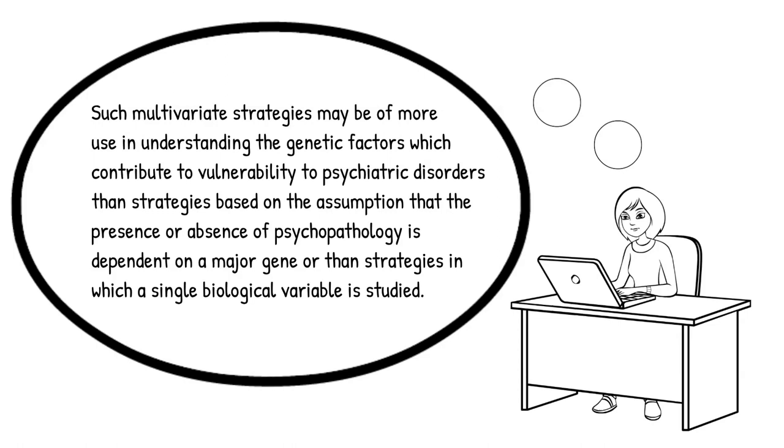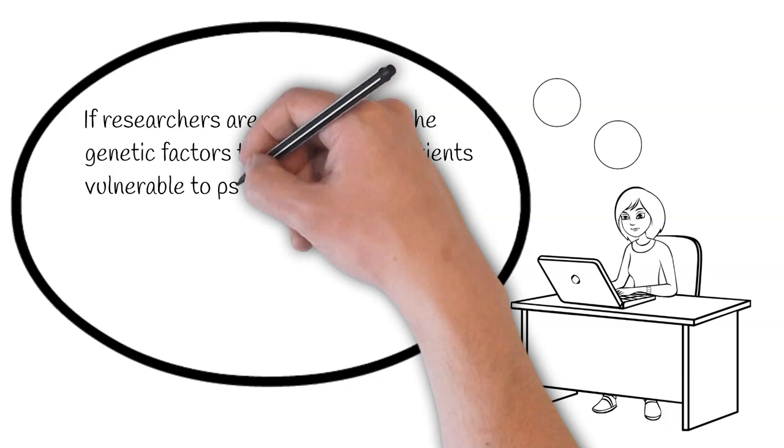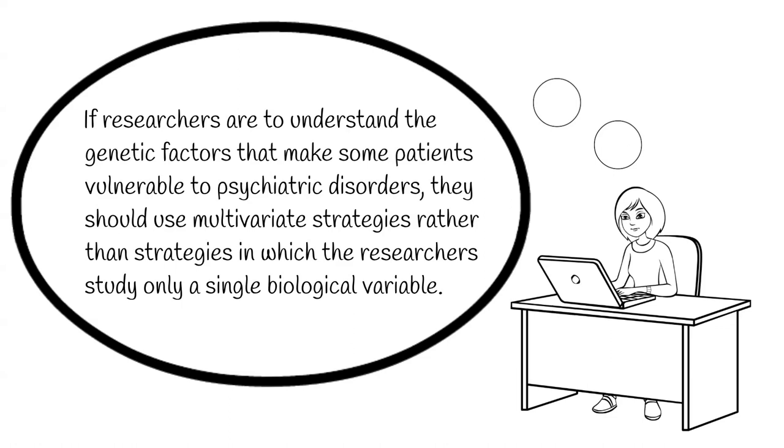So, this sentence is a pretty epic fail. And that raises the question, couldn't all of this have been expressed in simple, plain English? What might that have looked like? Well, Billig has rephrased this for us to show how the subject matter does not actually have to be this complicated. This is his version of the sentence. If researchers are to understand the genetic factors that make some patients vulnerable to psychiatric disorders, they should use multivariate strategies rather than strategies in which the researchers study only a single biological variable. Now, there's still a bit of jargon in the sentence that deserves to be explained, but at least now the sentence has a clear subject: researchers. And those researchers are doing things in ways that we can understand. This is certainly much better.